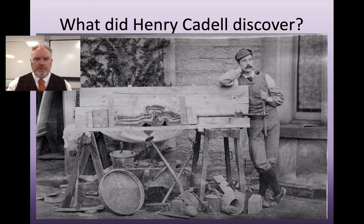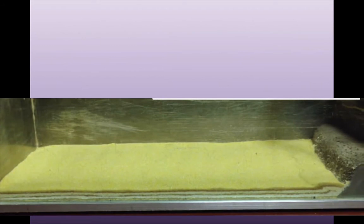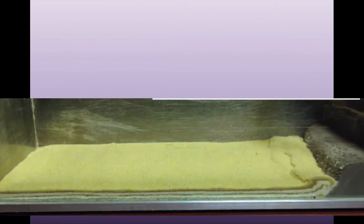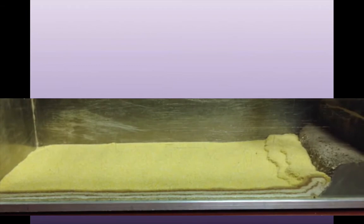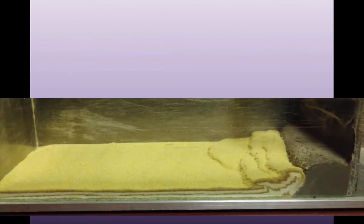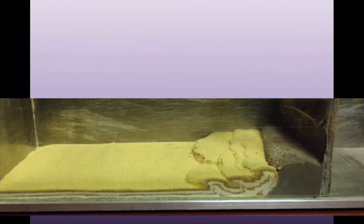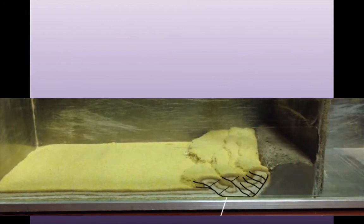This is a modern recreation of Cadell's experiment. There's a layer of sand and plaster clay stacked up ready to be compressed. We then start to compress that — the equivalent of plate movement — and we can see how these horizontal layers react to that stress. You can see them start to bend, and eventually the compression becomes so great they start to break. So we see folding and, as you can see now, a whole series of faults.